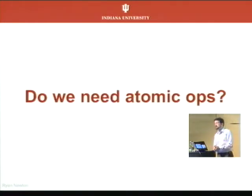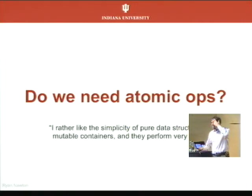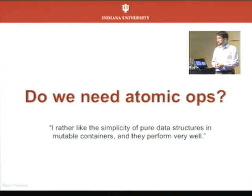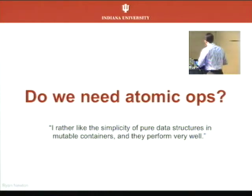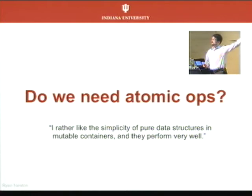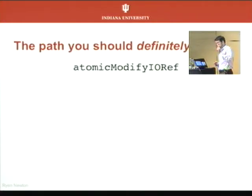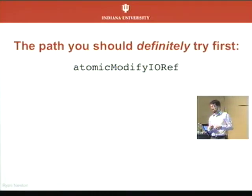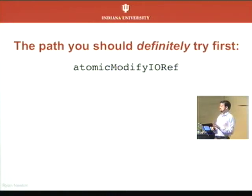The first question we need to ask ourselves as Haskellers is: do we actually need all this stuff? Simon Marlow has a nice quote that I completely agree with. He said, 'I rather like the simplicity of pure data structures in mutable containers, and they perform very well.' So in spite of being here talking about this topic, I want to believe this. As a Haskell parallel/concurrent programmer, you should always use this as your first go-to solution.